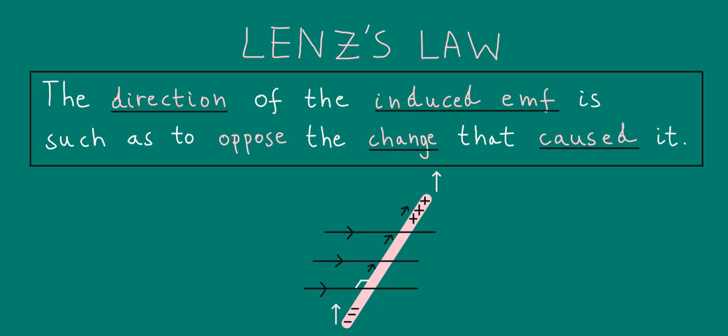And as we discussed earlier, from Fleming's left-hand rule, this leads to a downward magnetic force on the wire, which tries to oppose the change, i.e. the upward motion of the wire.